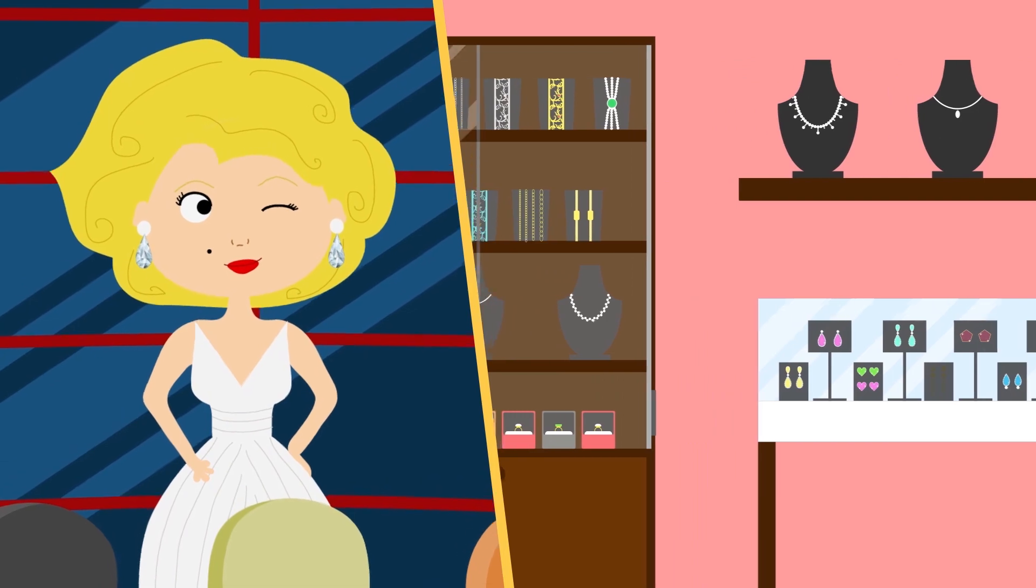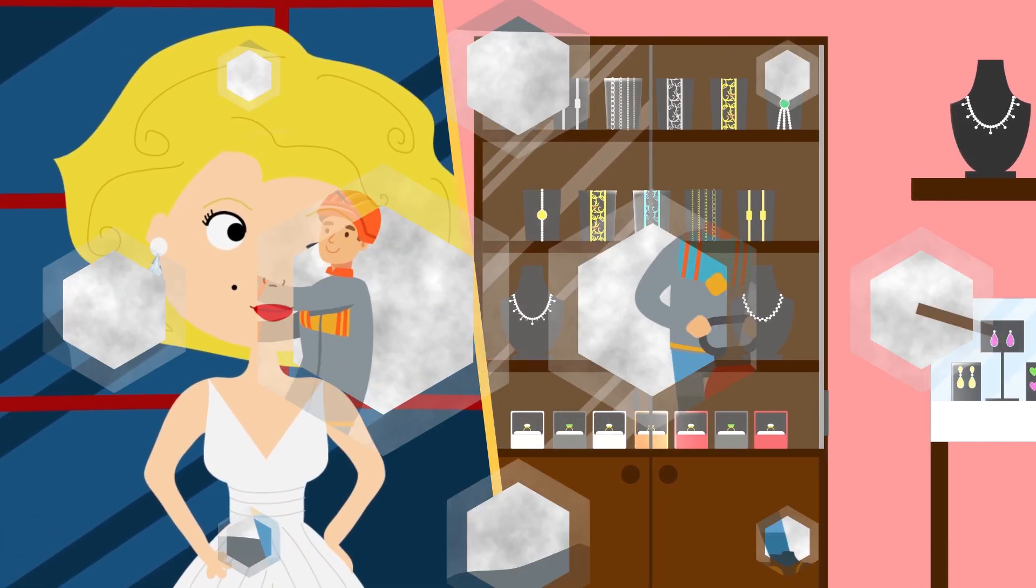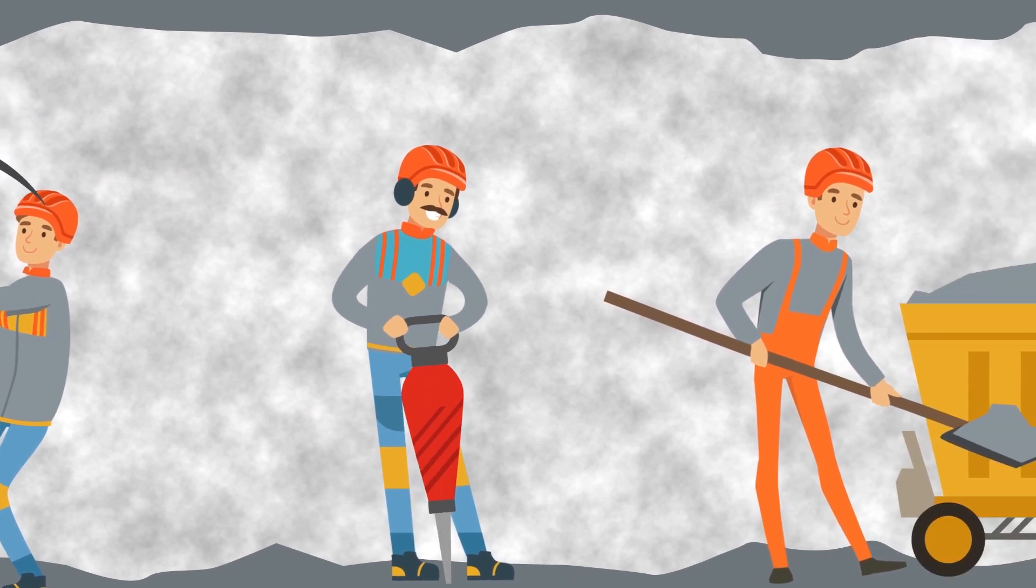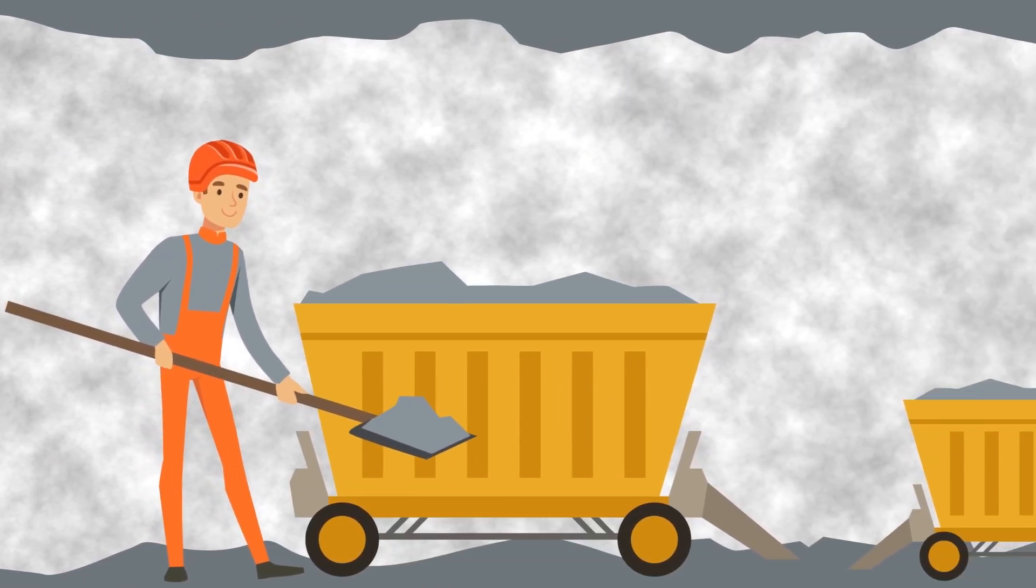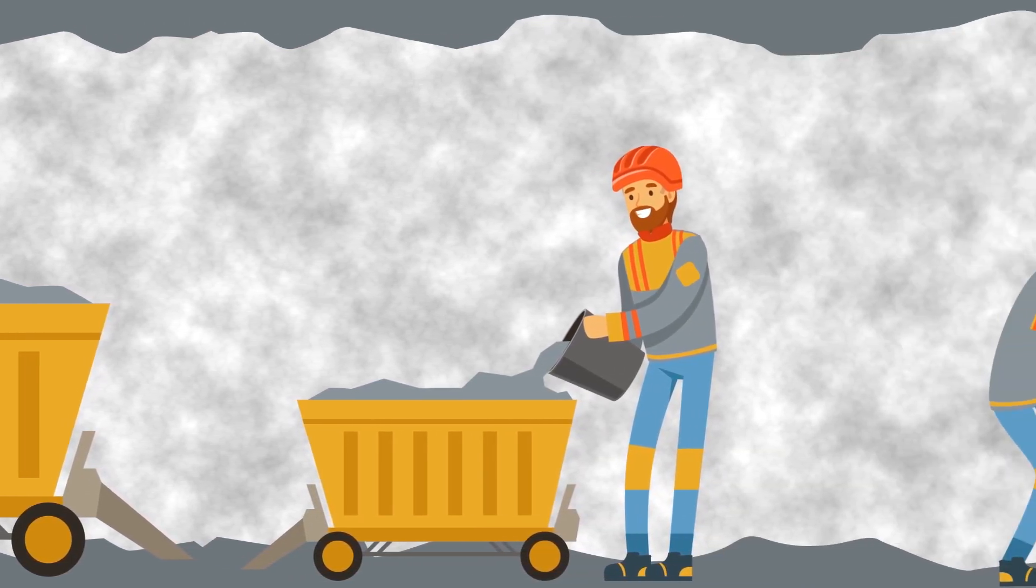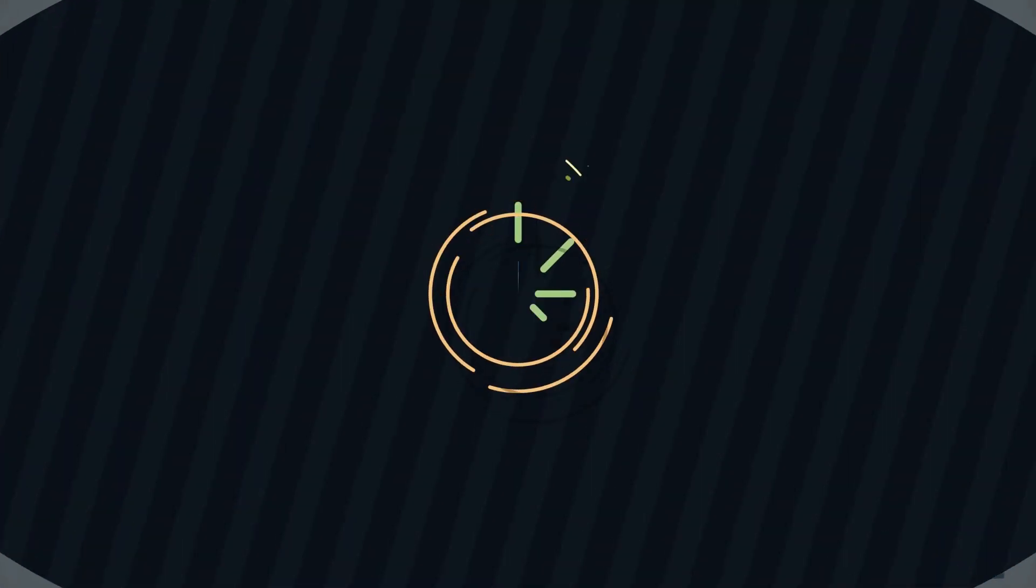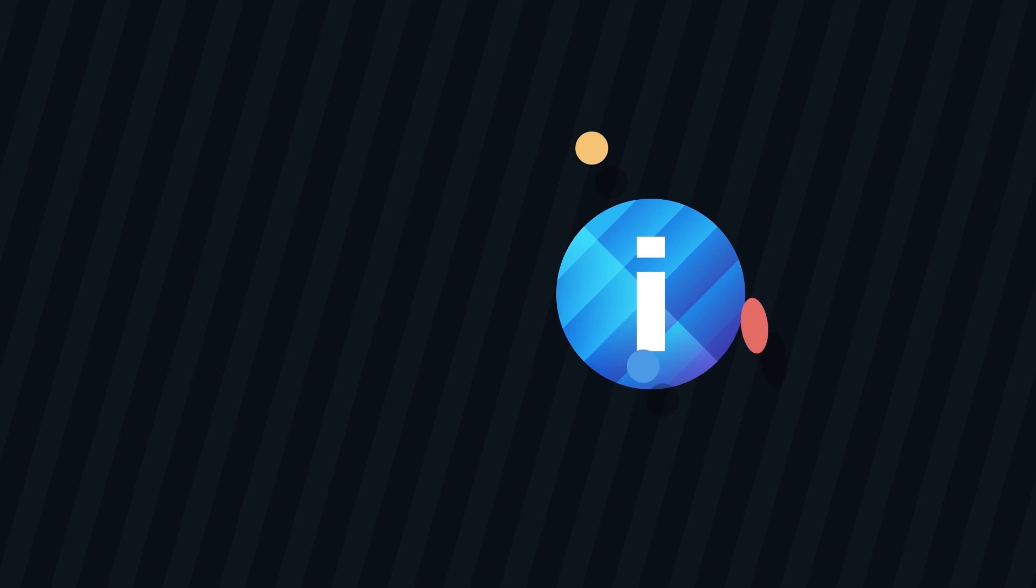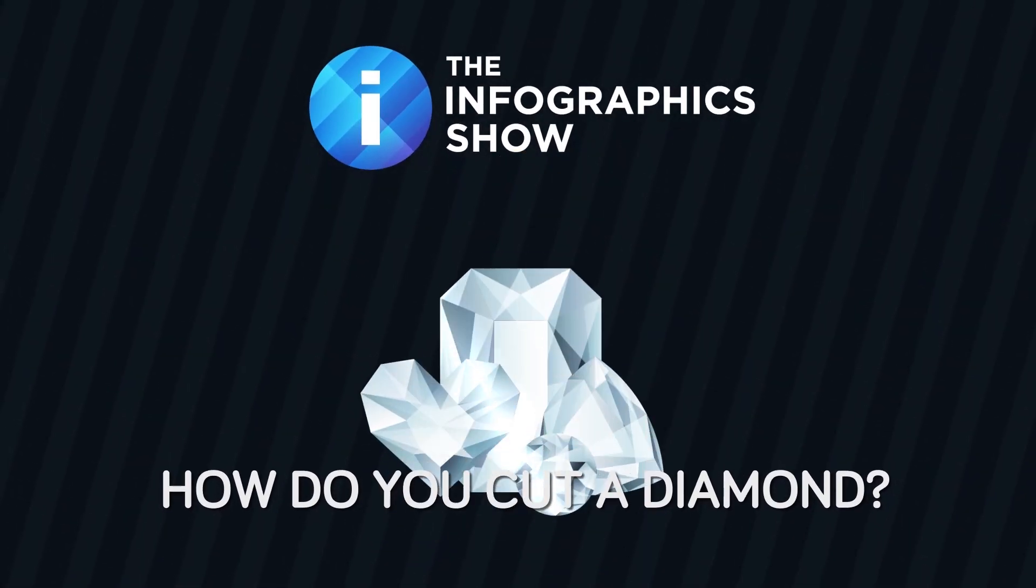The word diamond comes from the Greek word for invincible, and there is no doubting the durability of these rocks. These precious stones have been sought out by humans and hoarded for as long as we can remember. But how does a lump of carbon over billions of years form into what we call a diamond, the hardest natural material known to man? And how do we cut and shape the rock into a beautiful piece of jewelry? Let's take a look at the diamond shaping process in today's episode of the Infographics Show. How do you cut a diamond?